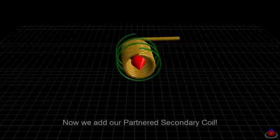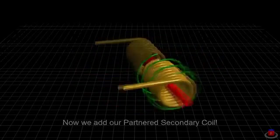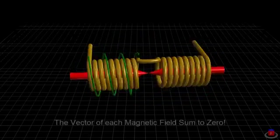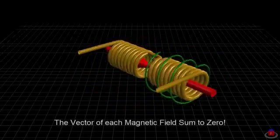Now we add our partnered secondary coil. The vector of each magnetic field sum to zero.